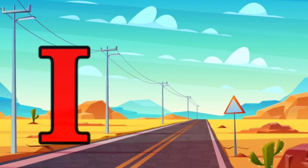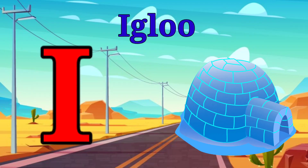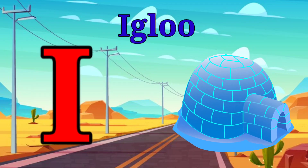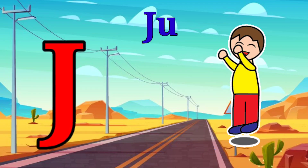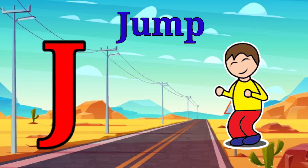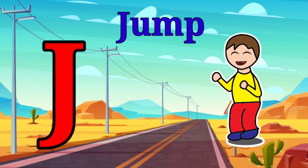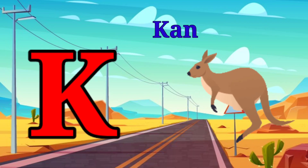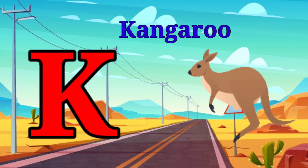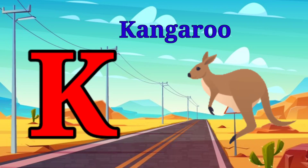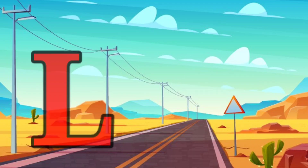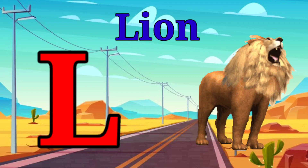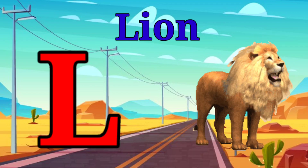I is for igloo, i-i-igloo. J is for jump, j-j-jump. K is for kangaroo, k-k-kangaroo. L is for lion, l-l-lion.